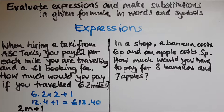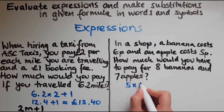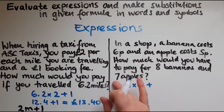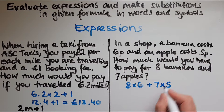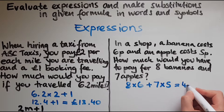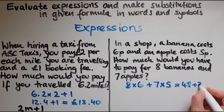How much would you have to pay for 8 bananas and 7 apples? We're looking at 8 bananas and each costs 6 pence, so we do 8 times 6, then add to it 7 times 5 because there are 7 apples costing 5 pence each. So that means 8 times 6 which is 48, and 7 times 5 which is 35.